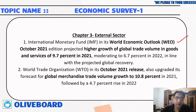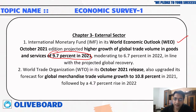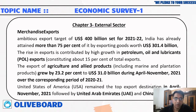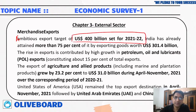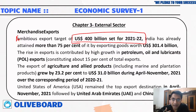Chapter 3 covers the external sector. The IMF World Economic Outlook projected higher growth for global trade volume in goods and services at 9.7 percent. The WTO in October reported global merchandise trade volume growth of 10.8 percent in 2021, followed by 4.7 percent rise in 2022. India set an ambitious merchandise export target of US dollar 400 billion, which was achieved — you can verify from April newspaper reports. This is a very potential exam question.